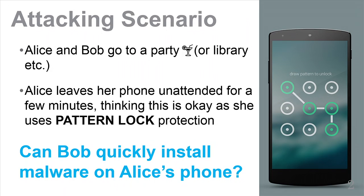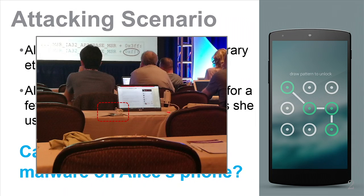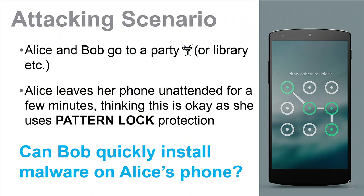Meanwhile, Alice thinks it is safe because her phone is protected by PatternLock. So he left his phone unattended for a few minutes. For example, in last session, I observed when someone left her phone on the table. So here I just, sorry to him, I just take it for example.